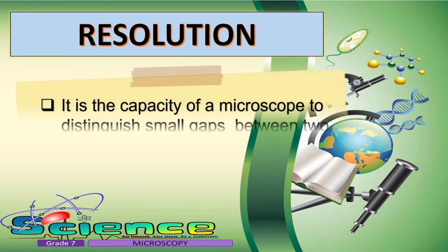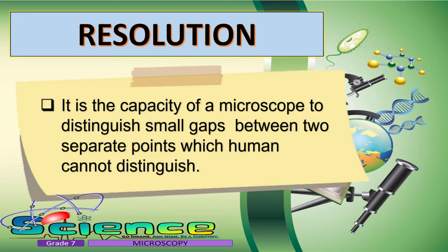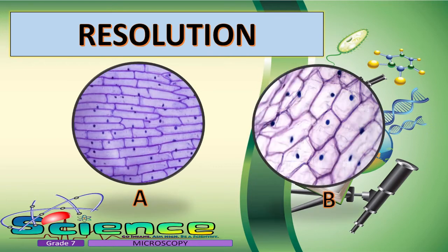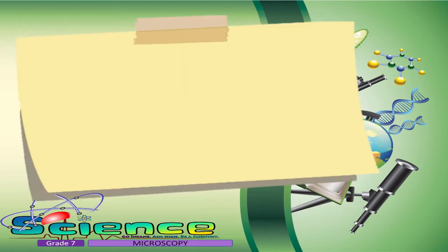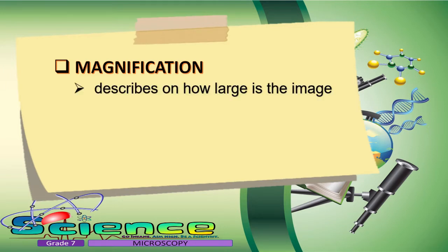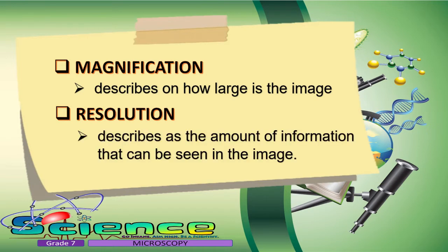When we say resolution, it is the capacity of a microscope to distinguish small gaps between two separate points which humans cannot distinguish. It is used to see the finer details of an object. Picture B has a higher resolution because more details of the onion cell are visible. To summarize: magnification describes how large the image is, and resolution describes the amount of information that can be seen in the image.